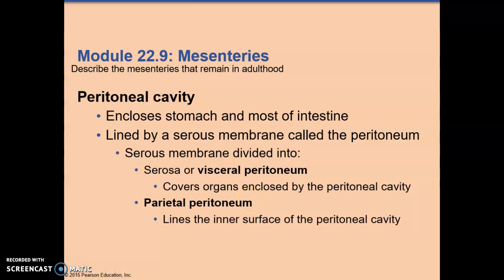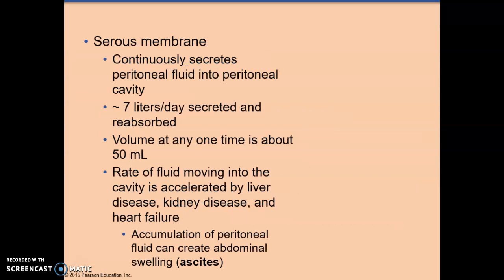The peritoneal cavity is produced by the peritoneal membrane and it encloses the stomach and most of the intestine. This membrane is called the peritoneum. It is a serous membrane that produces serous fluid. It is divided, like other serous membranes, into the visceral and the parietal. The visceral peritoneum covers organs; the parietal peritoneum lines the cavity.